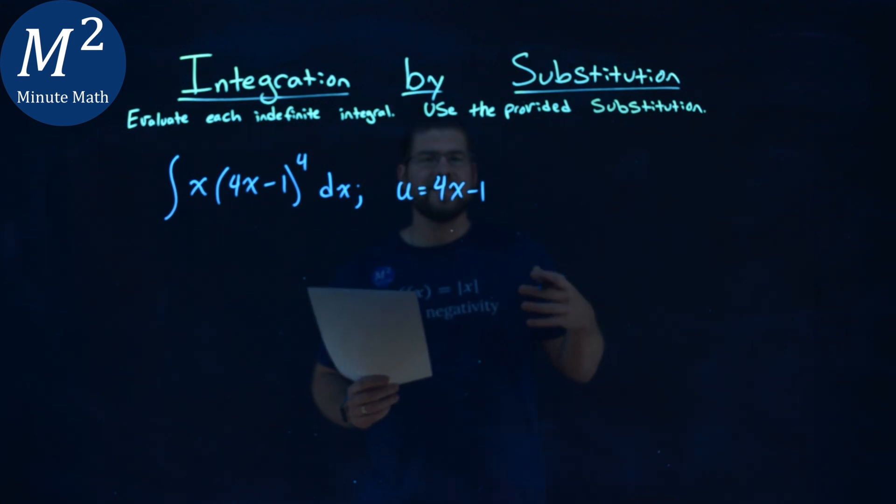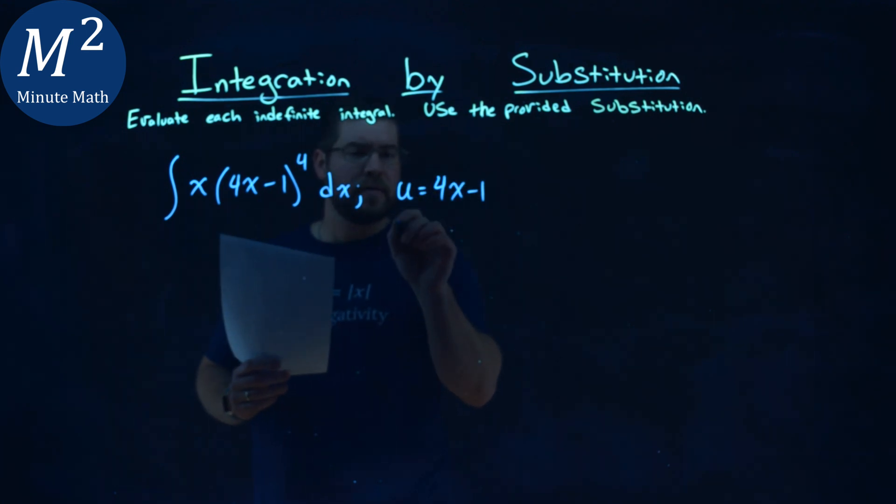The first thing I like to do always is find my du at this point. du here, derivative of the 4x minus 1, is just a 4dx.